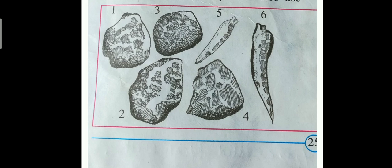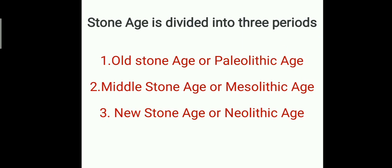Therefore, only the stone tools made by humans thousands of years ago are found today. On this basis, we can say that the period from which stone tools are found is called the stone age. Stone age is divided into three periods: old stone age or Paleolithic age, middle stone age or Mesolithic age, and new stone age or Neolithic age. This division has been done on the basis of the shape and types of stone tools found during excavation.